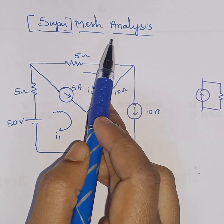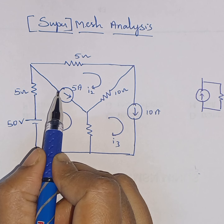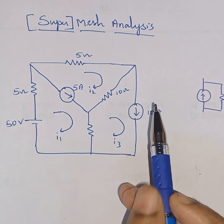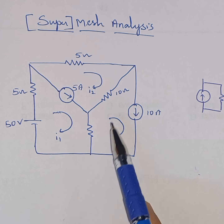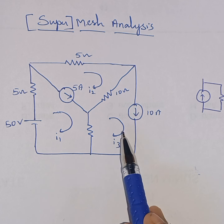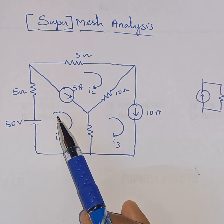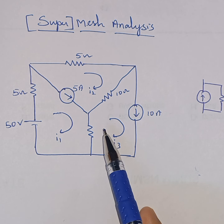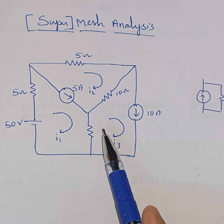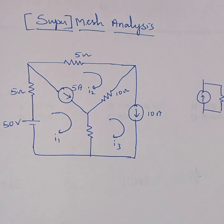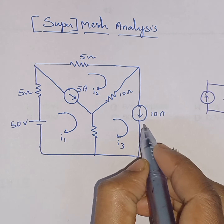We are given a circuit with 3 loops and 3 mesh currents: I1, I2, and I3. Because current sources are present, we cannot write 3 independent loop equations directly. Instead, we will write KVL equations using the super mesh approach.